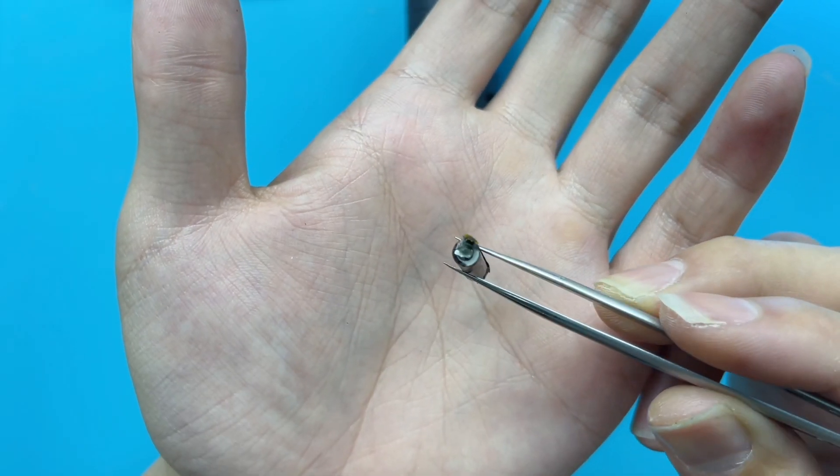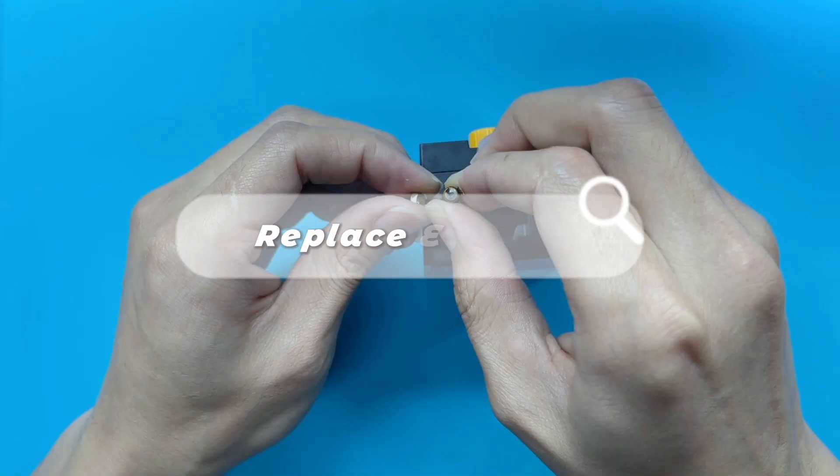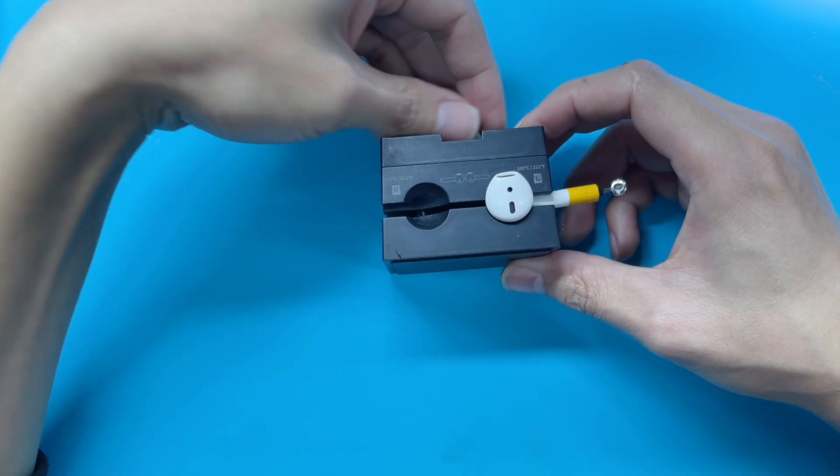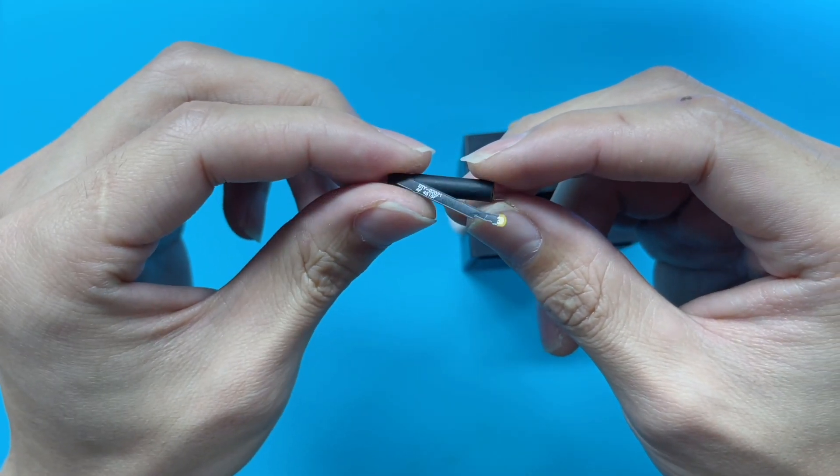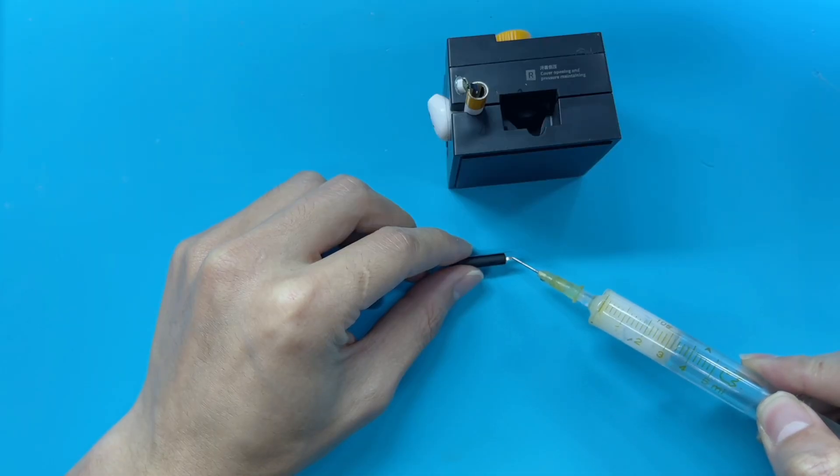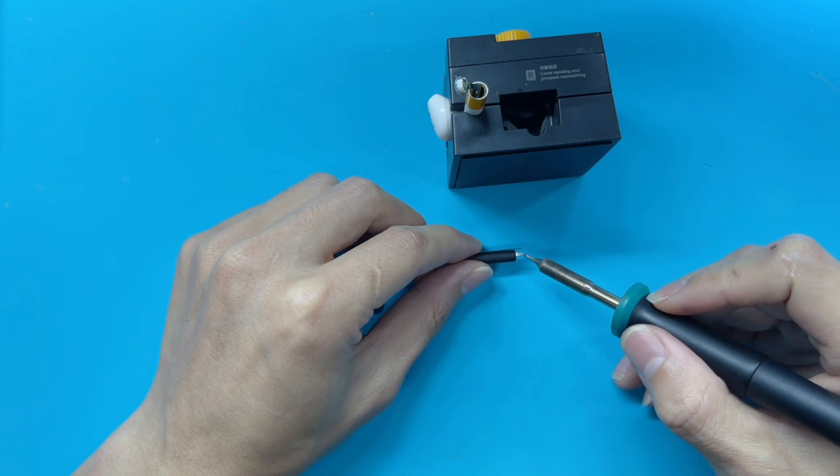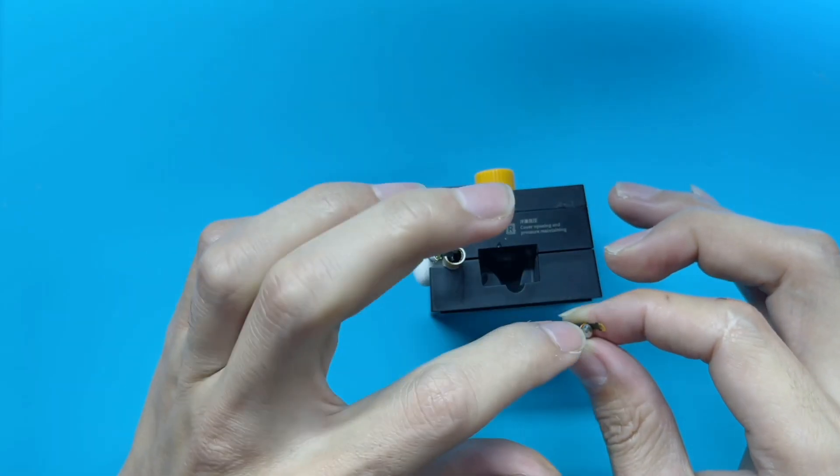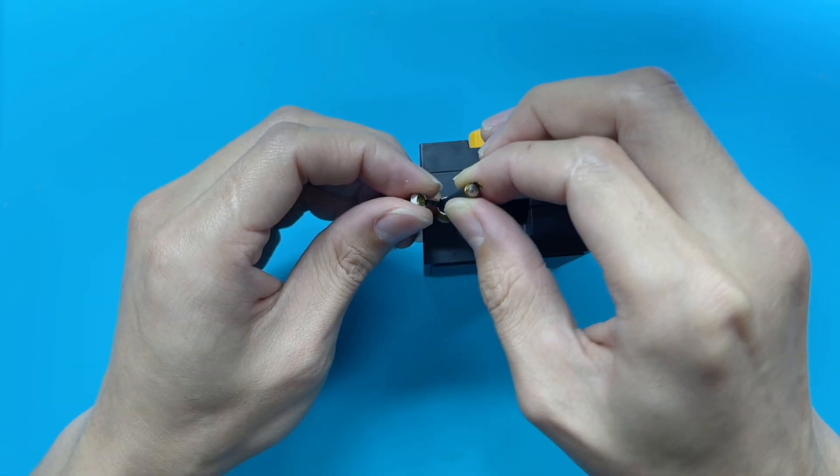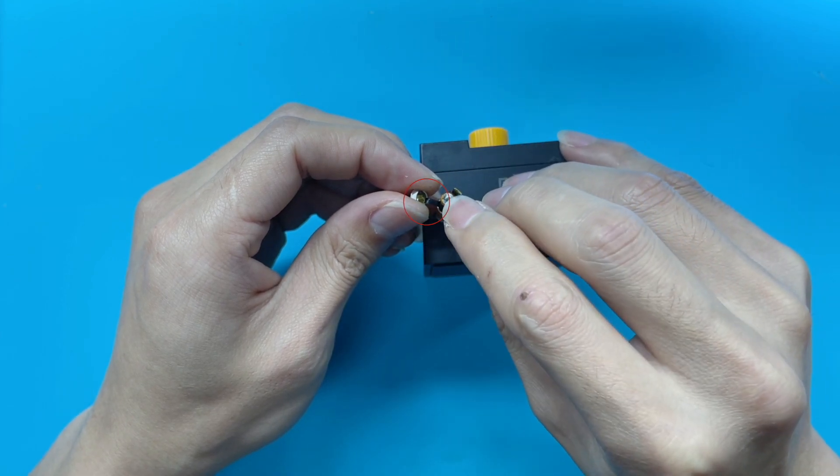Here is the old battery. Next, fix the AirPods to the special clamp again. Take out the new battery and put some flux on the positive of the battery. We must align the positive of the battery with the positive of the AirPods when inserting the battery.